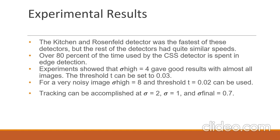The experimental results: all detectors are implemented in Python and using the source code we ran the CSS method. The Kitchen and Rosenfield detector was the fastest of these detectors. 80% of the time used by CSS is spent in edge detection. CSS uses only two important parameters. The experiments showed that sigma equal to 4 gave good results with almost all images. With sigma equal to 4, the threshold T can be set to 0.03. For a very noisy image, sigma equal to 8 and threshold T equal to 0.02 can be used. Starting with sigma equal to 4, tracking can be accomplished at sigma equal to 2, sigma equal to 1, and sigma final equal to 0.7. The final scale should be as low as possible to ensure good localization. Corner detection can be carried out at multiple scales, and by adjusting the scales, the number of detected corner points can be increased or decreased.